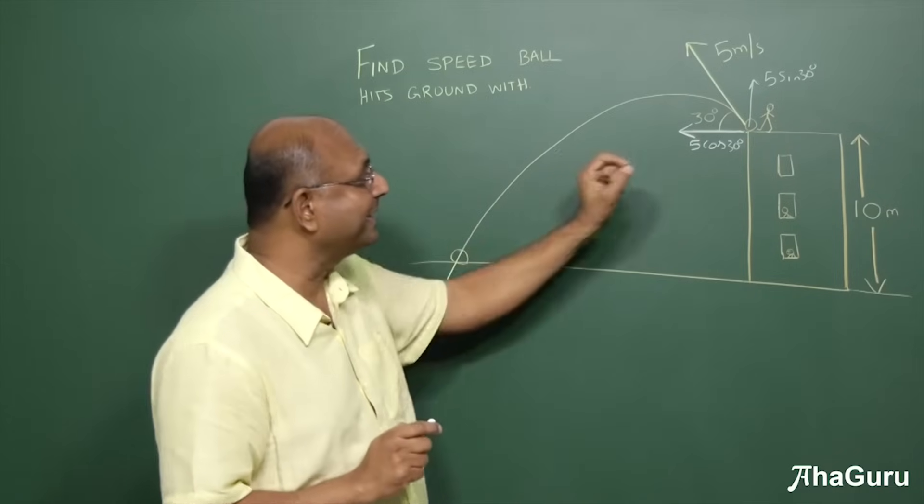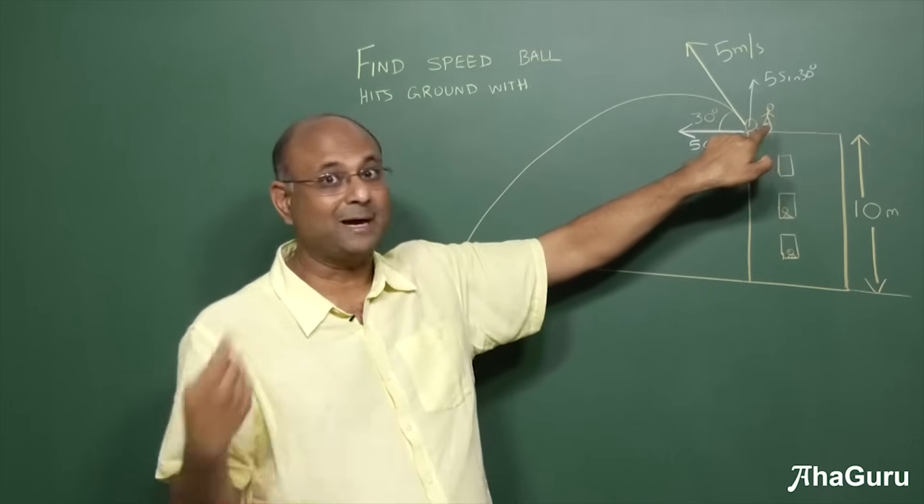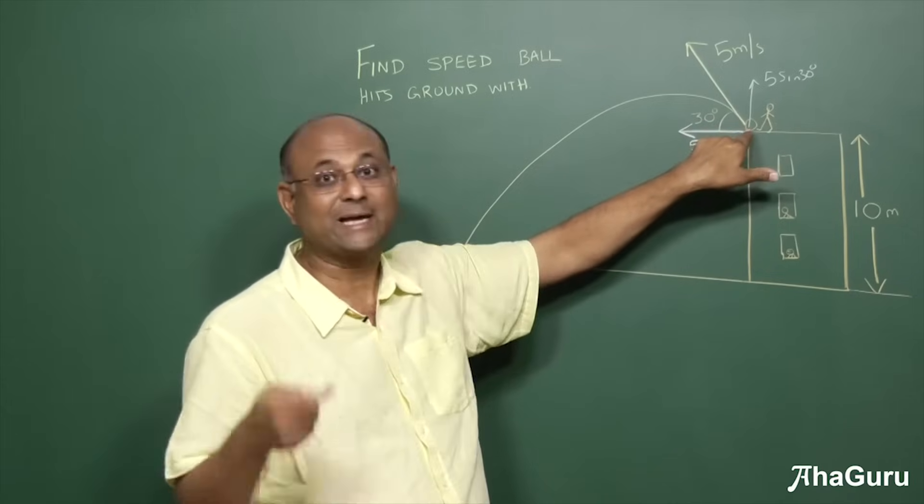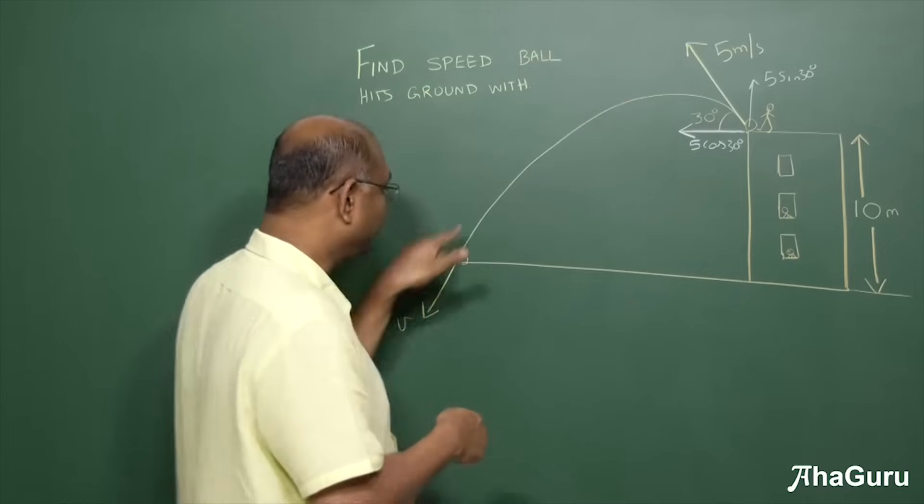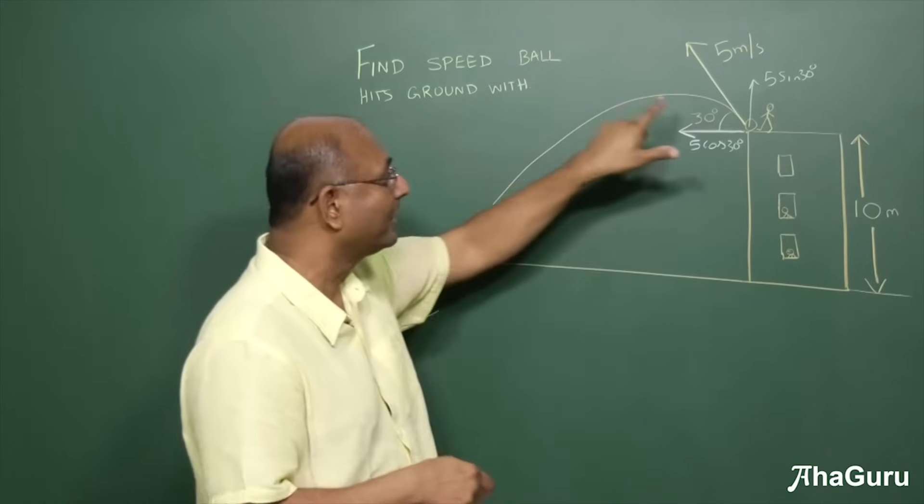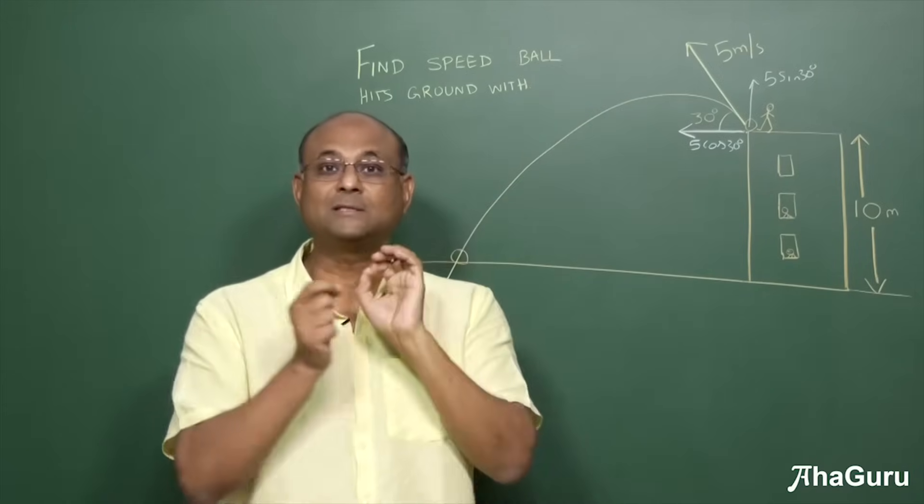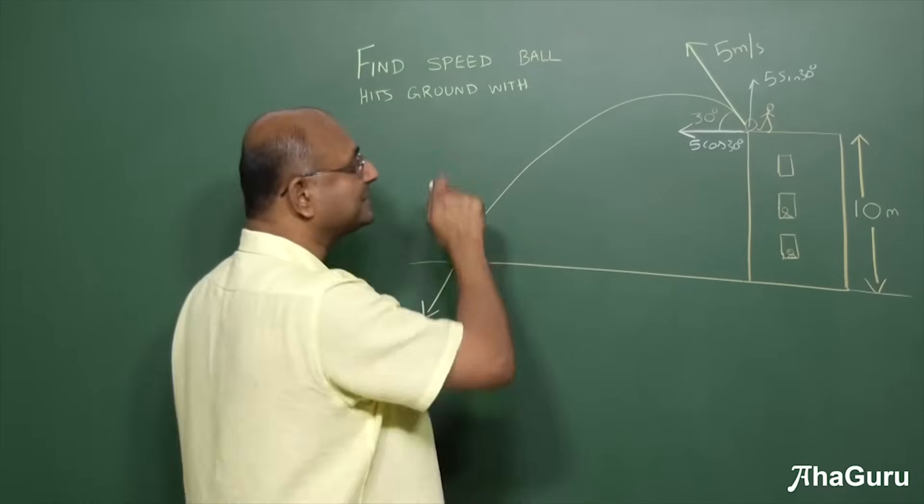Instead, if you recognize that this ball has some mass, it has some potential energy, it has kinetic energy. And energy there must be equal to the total energy here. So if you can equate the total energies, you will finish the problem in 30 seconds. So let us see.